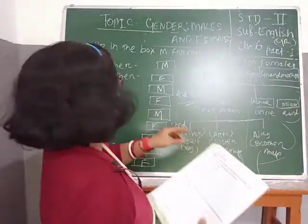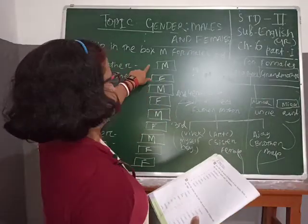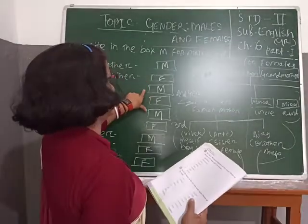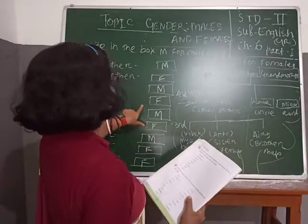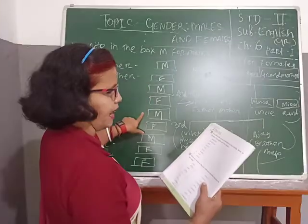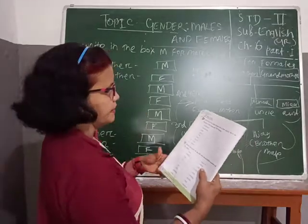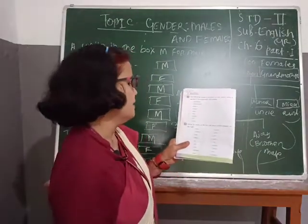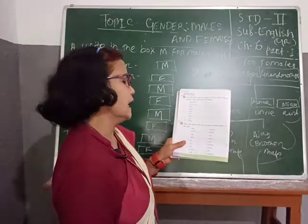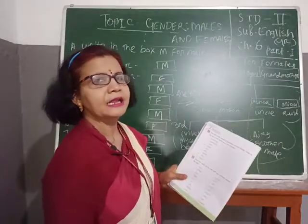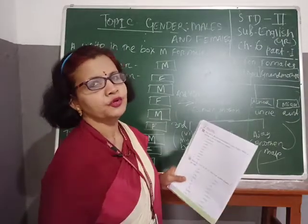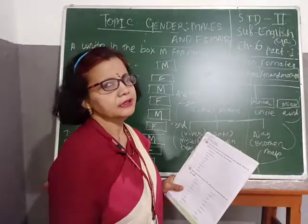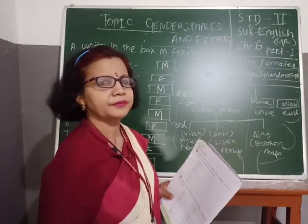Number 1: M. Number 2: F. Number 3: M. Number 4: F. Number 5: M. Number 6: F. Number 7: M. Number 8: F. Number 9: depends on you — if you are a boy, write M; if you are a girl, write F.